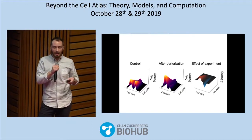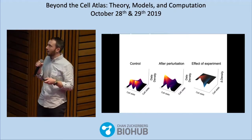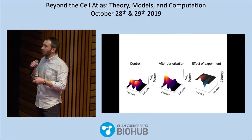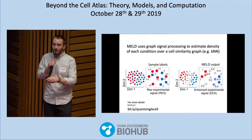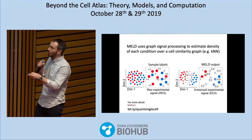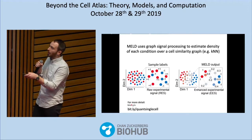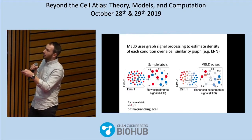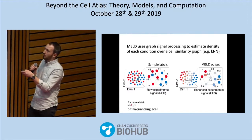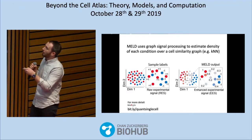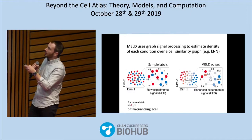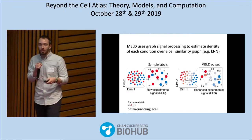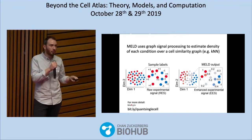Estimating density in high dimensions is incredibly complicated, so we take a simplified data model: a cell similarity graph. The basic idea is we take a K-NN graph and use sample labels telling you whether a cell received a perturbation or not — the raw experimental signal. The output of MELD is the enhanced experimental signal, which for each cell gives a continuous label indicating the conditional likelihood of observing that cell after applying the perturbation.